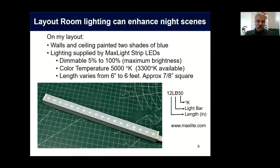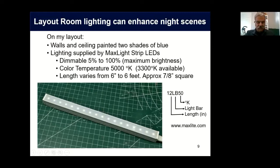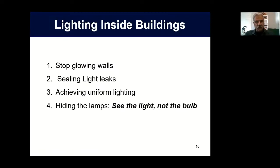Unlike a lot of LED systems, these things are dimmable from 5% to 100% maximum brightness, which makes it really easy to do photography on your layout when you want to vary the lighting. The color temperature I use is 5,000 degree Kelvin, which is not quite as bright as daylight but fairly white. For those who like a warmer look, you can get 3,300 degree Kelvin light bars from the same source. Their lengths vary from six inches to six feet, and you can plug them together with built-in interconnects or get pre-made wires. They're made by MaxLite. The nomenclature is, for example, 12LB50 — the 12 is the length in inches, LB stands for light bar, and 50 is the temperature in degrees Kelvin divided by 100.